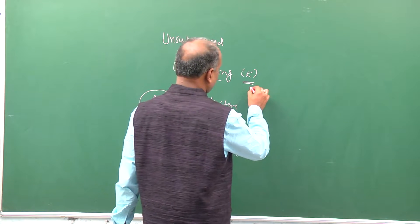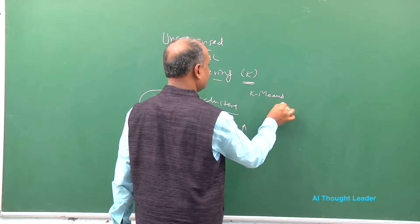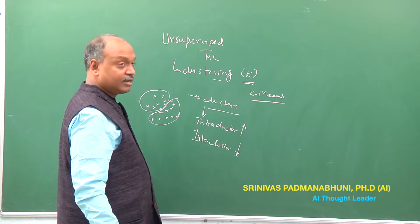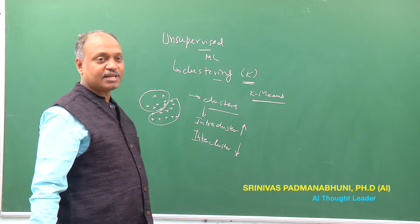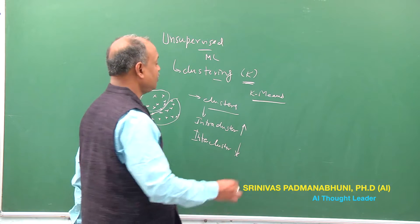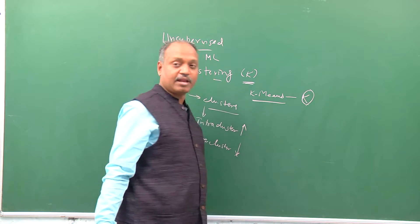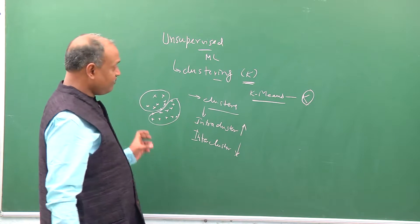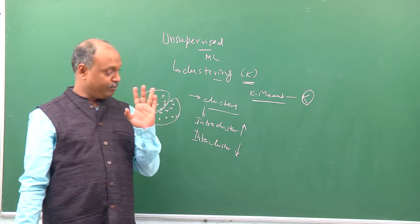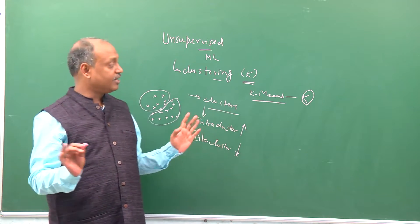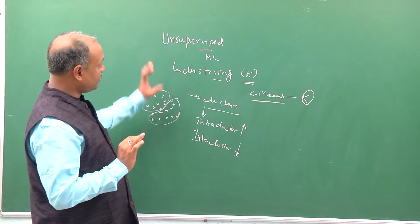Once you know what k is, you have techniques for actually identifying the clusters in the original data like k-means clustering. K-means clustering takes the original data and divides the entire data into k clusters. From the input perspective, it takes the original raw data which is unlabeled; there is no output variable, so it is an unsupervised algorithm.